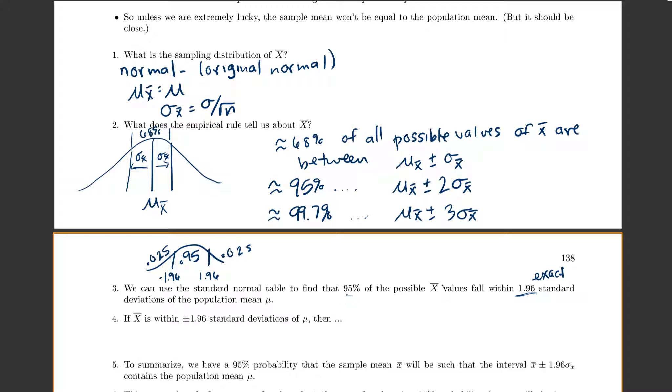So we said all of our possible x-bar values will be within 1.96 standard deviations of mu. So if x-bar is within 1.96 standard deviations of mu, then mu is within 1.96 standard deviations of x-bar. So if x-bar is so close to mu, mu also has to be so close to x-bar.